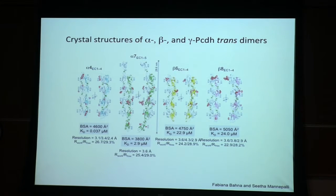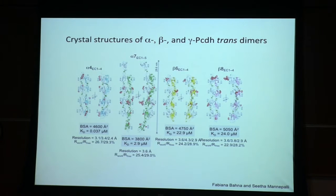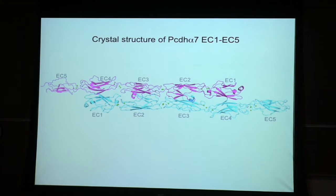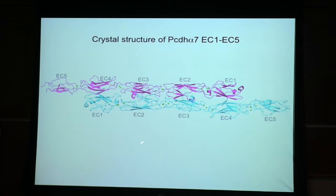We solved the structure of protocadherins — a few of them. As opposed to classical cadherins, these guys form anti-parallel contacts. These are very similar proteins to the cadherins I've been showing you, yet they interact in a completely new way. Instead of forming a banana shape, they're very straight and form this anti-parallel head-to-tail structure where EC1 — the membrane distal region — connects to EC4. So EC1 to EC4, EC2 to EC3 — this is the interface they form.